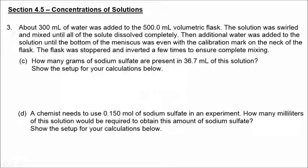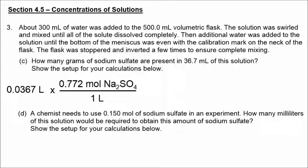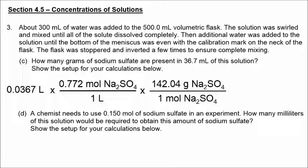In parts C and D, we're using the concentration of sodium sulfate as a conversion factor. Molar mass allows us to convert between grams and moles, and molarity allows us to convert between moles and liters. Starting with 36.7 milliliters, equivalent to 0.0367 liters, the first conversion factor converts from liters to moles using concentration, and the second involves molar mass converting from moles to grams. The final answer, rounded to three significant figures, is 4.02 grams of sodium sulfate.